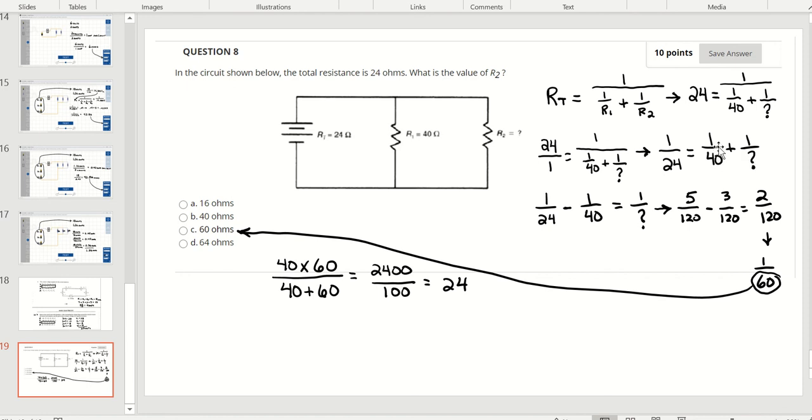If we subtract 1/40th from each side, that would give us 1/24th minus 1/40th is equal to 1 over our unknown.